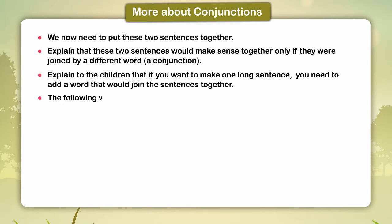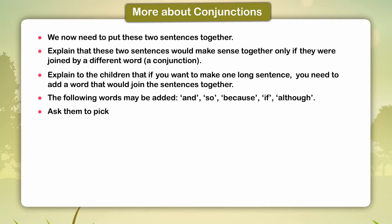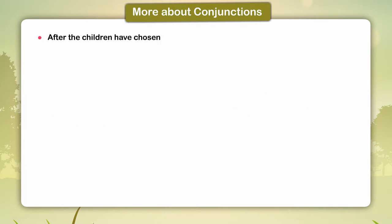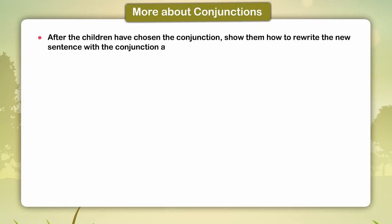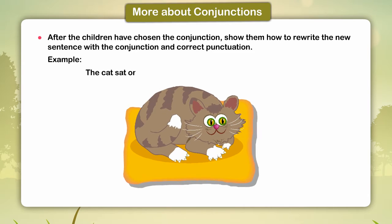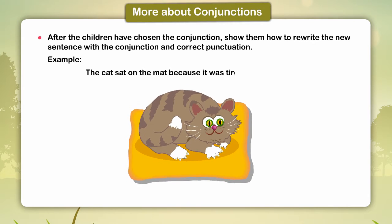These words may be added: and, so, because, if, although. Ask them to pick a conjunction which best fits the sentences so that they make sense together. After the children have chosen the conjunction, show them how to rewrite the new sentence with the conjunction and correct punctuation. Example: 'The cat sat on the mat because it was tired.'